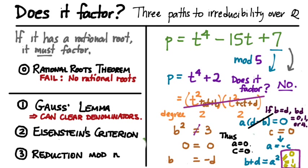Therefore, there is no possible way for this polynomial to factor in Z mod 5. According to reduction mod n, if it's irreducible over Z mod 5, that makes it irreducible over Z, and Gauss's Lemma makes this original polynomial irreducible over Q. Those are three different methods to justify why a polynomial is irreducible over Q: Gauss's Lemma lets us clear denominators and work over Z; Eisenstein's Criterion — the most important one — uses divisibility properties of coefficients to find a prime dividing every non-leading coefficient but not the leading one, whose square doesn't divide the constant term; and if Eisenstein doesn't work, we can try reduction modulo n.